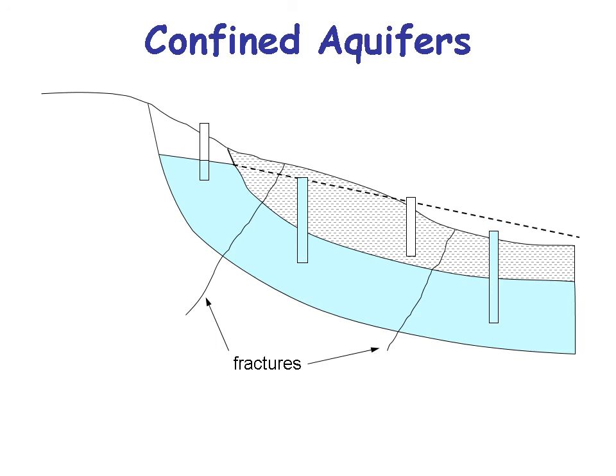You can get fractures in rocks, and water will come up through those fractures from the confined aquifer and flow downstream — we call those springs. The nice thing about a spring is that you get fresh, clean water that is sometimes thousands of years old, and you can drink that spring water if it hasn't been polluted.